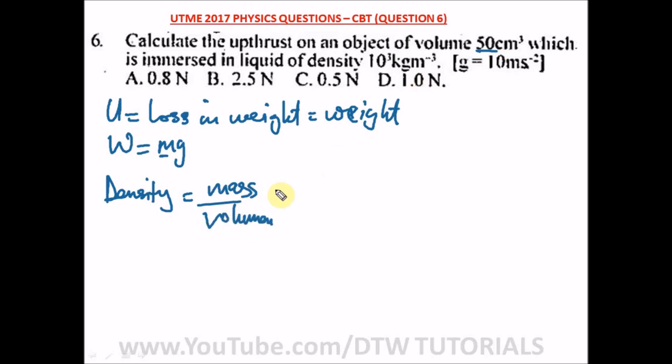So to get mass, m = density ρ times volume V. Our density is 10³, that's 1000. 10³ is the same as 1000, times our volume which is 50 cm³.